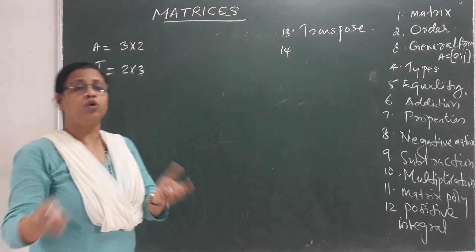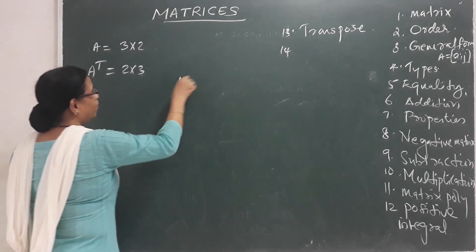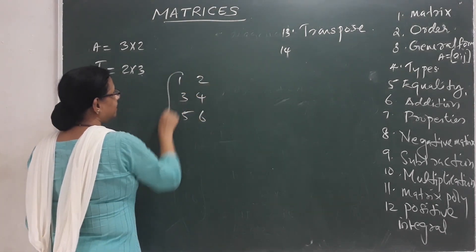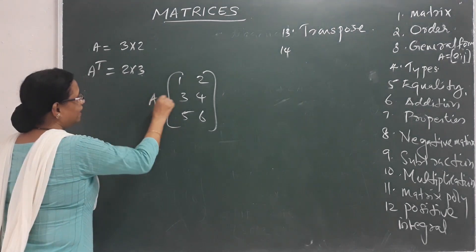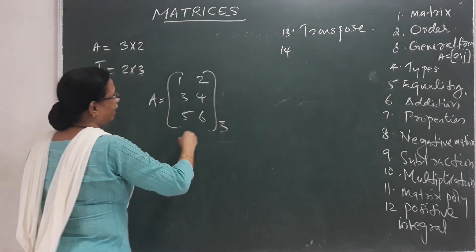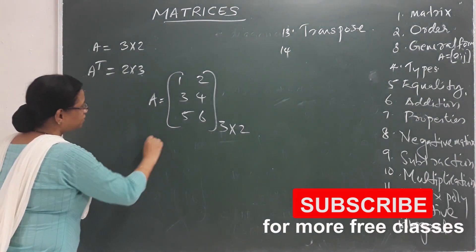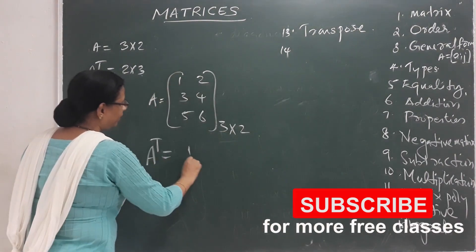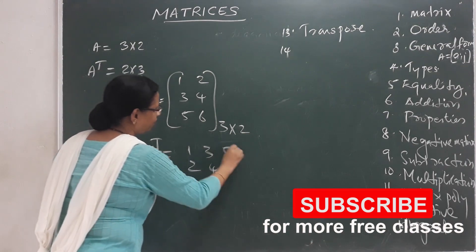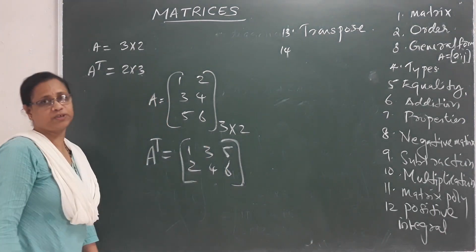What does this order mean? It is called the Transpose of a Matrix. The elements are 1, 2, 3, 4, 5, 6. This is the matrix — we call it 3 by 2. The transpose of this matrix has elements 1, 2, 3, 4, 5, 6, and this is called the Transpose of the Matrix.